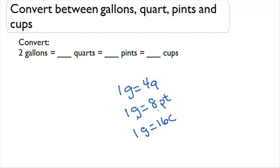Alright, now that we have our formulas, we can start doing our multiplication. We have two gallons here, and every one gallon is equal to four quarts. So we're going to multiply our two gallons by four to find that two gallons is equal to eight quarts.